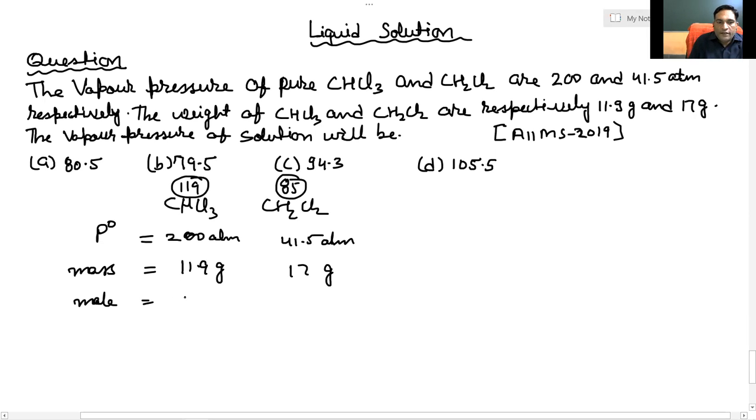Let's calculate the moles. 11.9 upon 119 is 0.1 mole. Here 17 gram, molar mass 85, one by five, that is 0.2 mole.